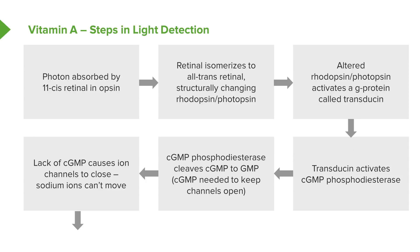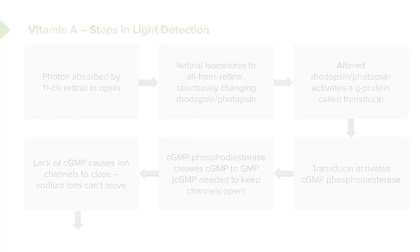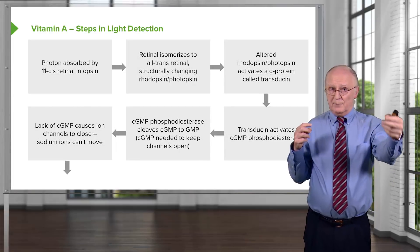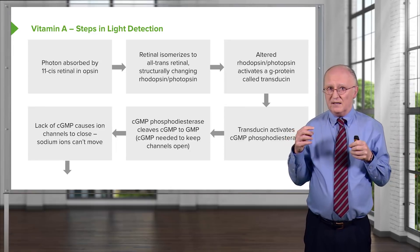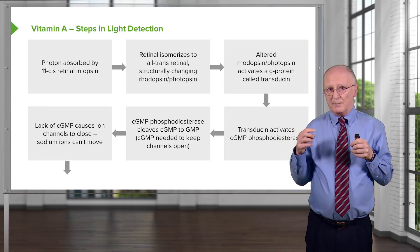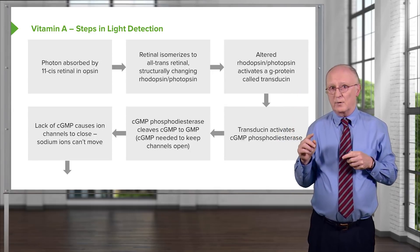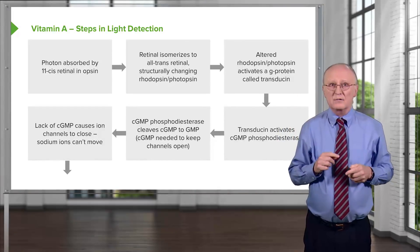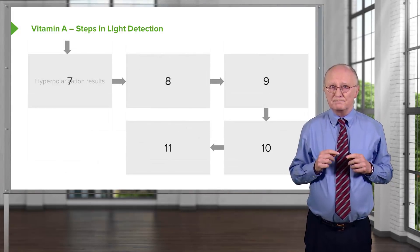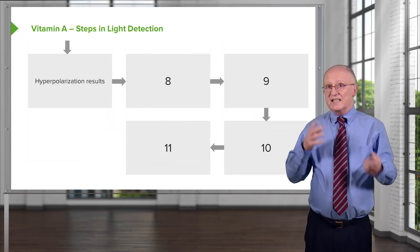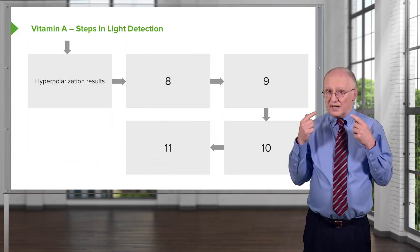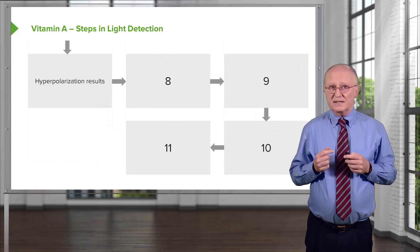Nerve cells have an important protein that pumps sodium ions out and potassium ions in. If the potassium ions are getting pumped in and the sodium ions are getting pumped out but the sodium ions can't come back in, the sodium ion concentration is going to increase — and that's what hyperpolarization is actually all about. The hyperpolarization that results is the next part of the signal telling the brain that the eye has detected light.